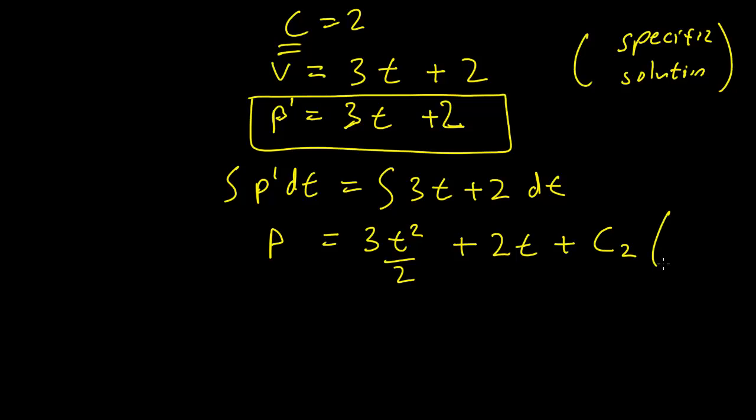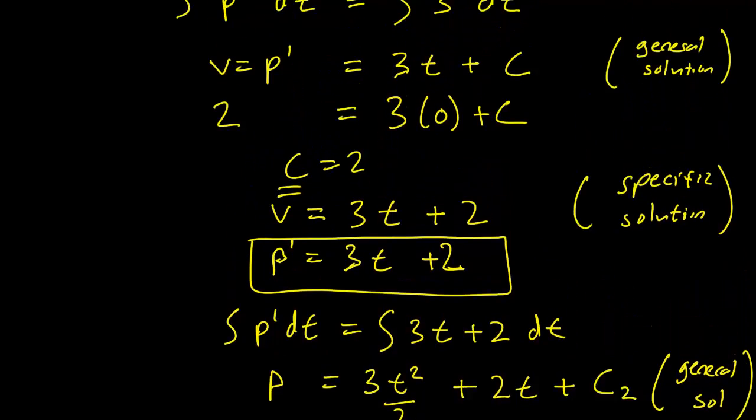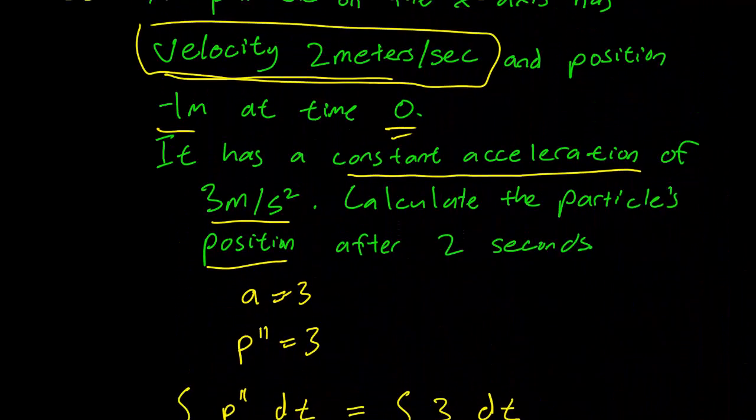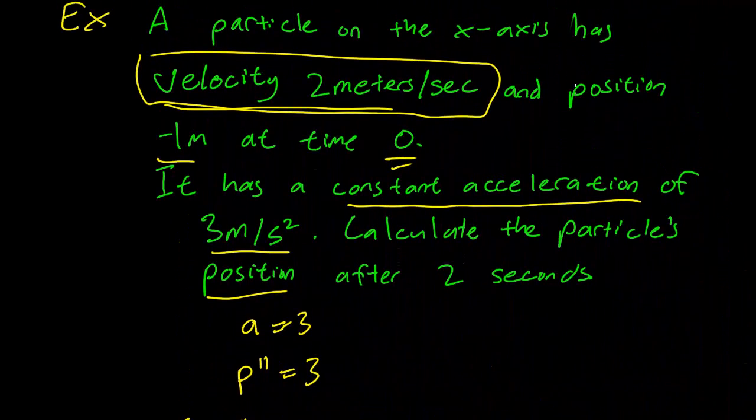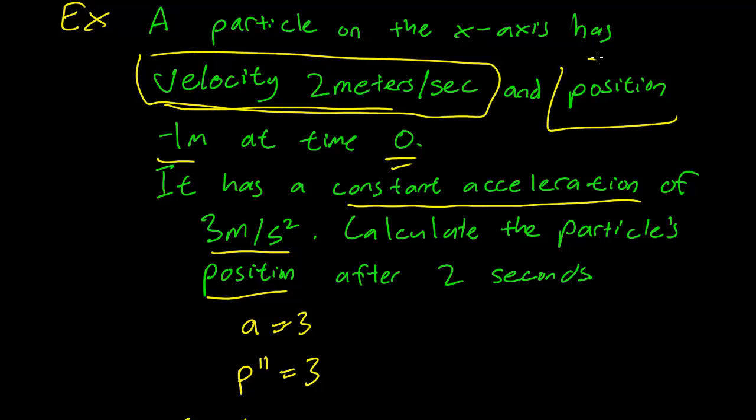So again, this is our general solution. We want to find a specific solution, and we need to find information about the position. So we have the position is minus 1 meter at time 0.